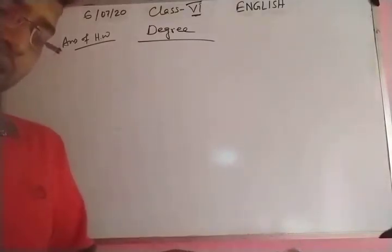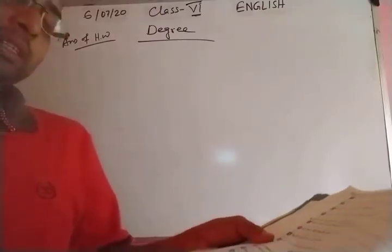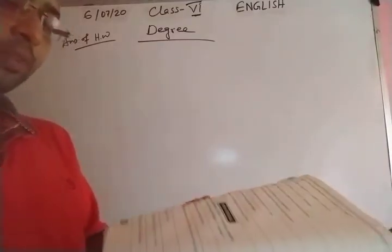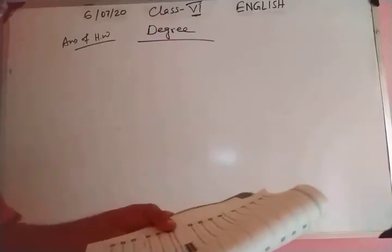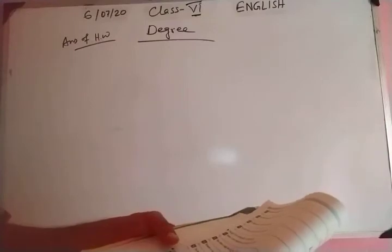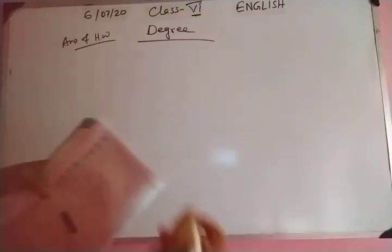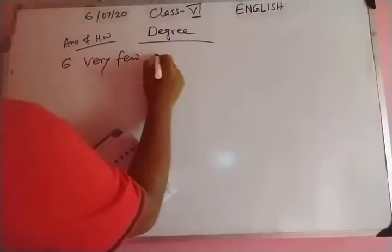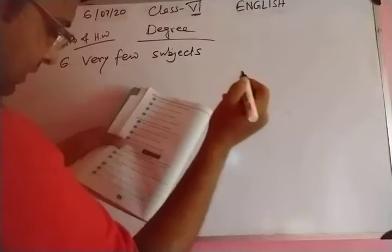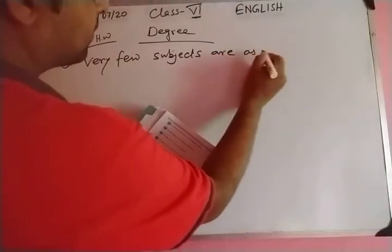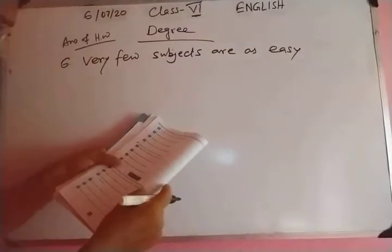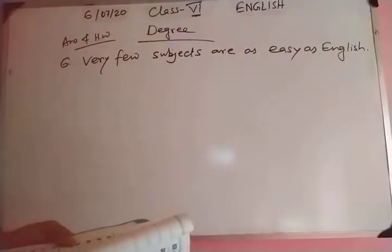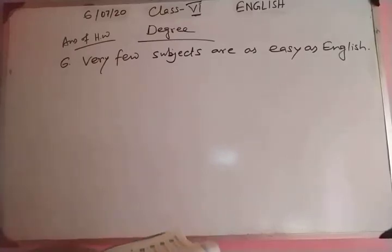Number 6: 'English is one of the easiest subjects.' You have to change it into positive degree. So you have to write: 'Very few subjects are as easy as English.' The positive form of the adjective 'easy' will be placed here.